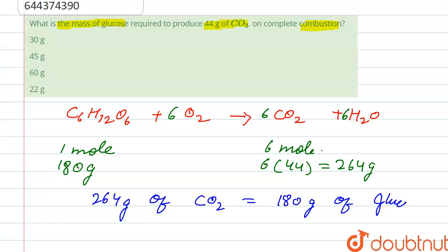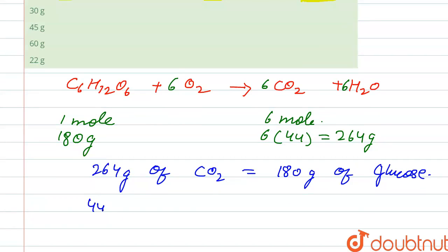So we have to calculate for 44 grams. So 44 grams of CO2 is obtained by 180 upon 264 into 44 of glucose.